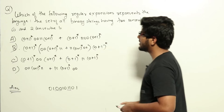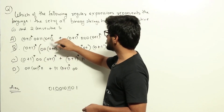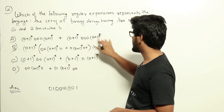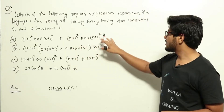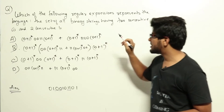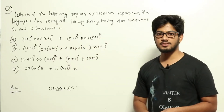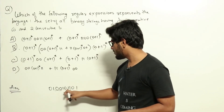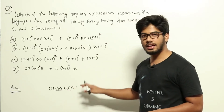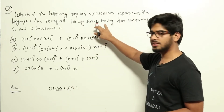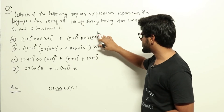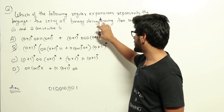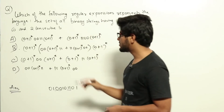Option A says: (0+1)* 00 11 (0+1)* + (0+1)* 11 00 (0+1)*. This regular expression generates the set of all strings which have 0011 or 1100 as a substring. Our sample string doesn't have 1100 or 0011 as a substring, but it does belong to the language — so this regular expression can't cover it. Clearly option A is wrong.